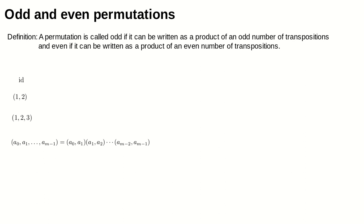In our last video on permutations, we're going to use the things we just proved about transpositions to define an interesting property of permutations in general, which is called their parity. That begins with a definition of odd and even for permutations. A permutation is called odd if it can be written as a product of an odd number of transpositions, and even if it can be written as a product of an even number of transpositions.